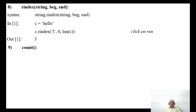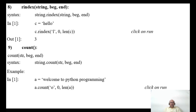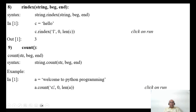Next is the count function. The syntax is: string.count(str, beginning, end). For example, to count how many times the character 'o' appears in 'welcome to python programming' starting from index 0 to len(a), the output will be 4, because 'o' appears 4 times in that string.